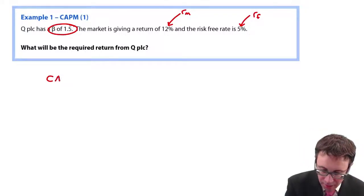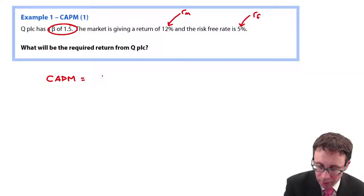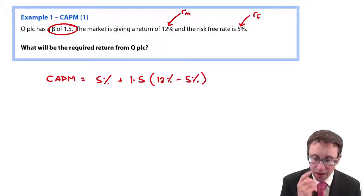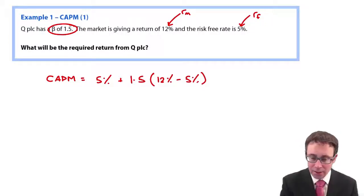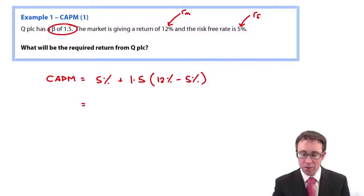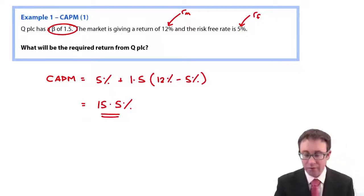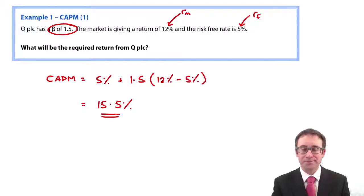So, the return that we get from the capital asset pricing model is that we have RF, which is there as 5 percent. Beta is 1.5 and we then multiply that by 12 percent less the 5 percent. So, 12 less 5 is 7, times by 1.5 plus the 5. The CAPM return is 15.5 percent.